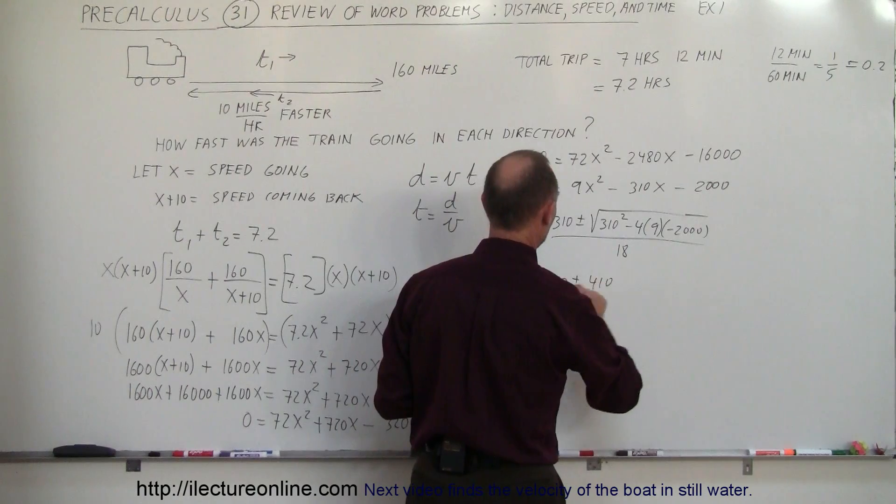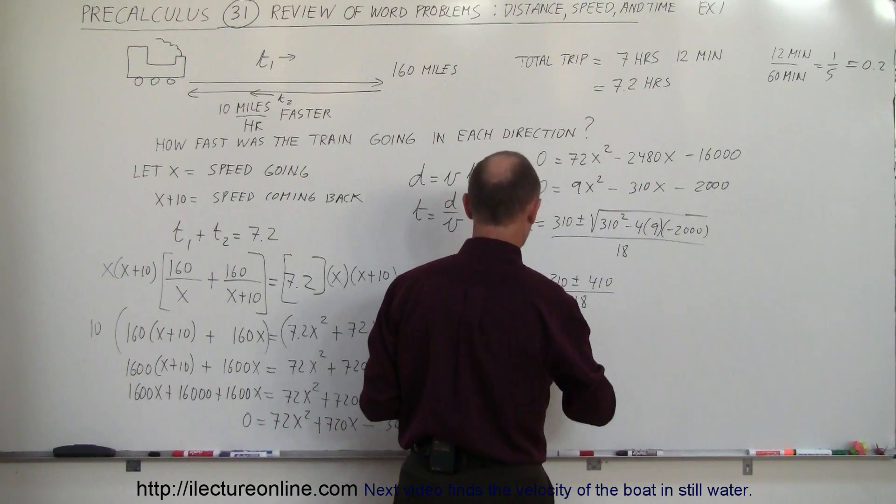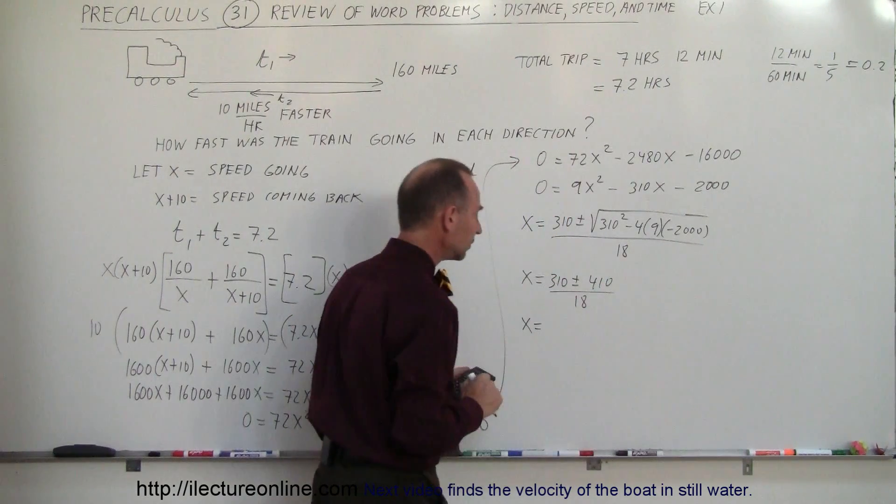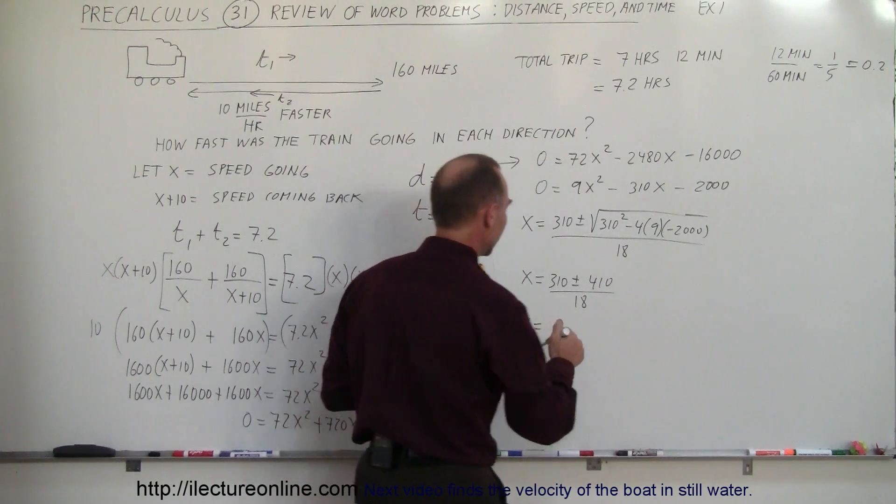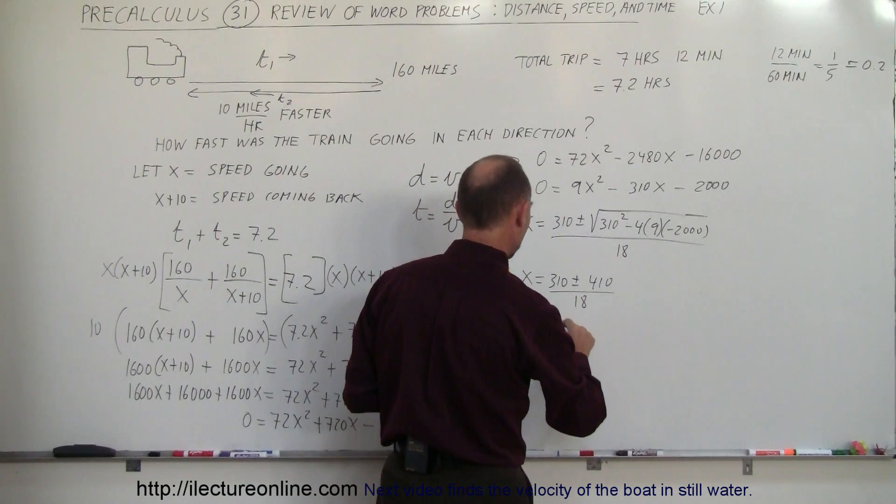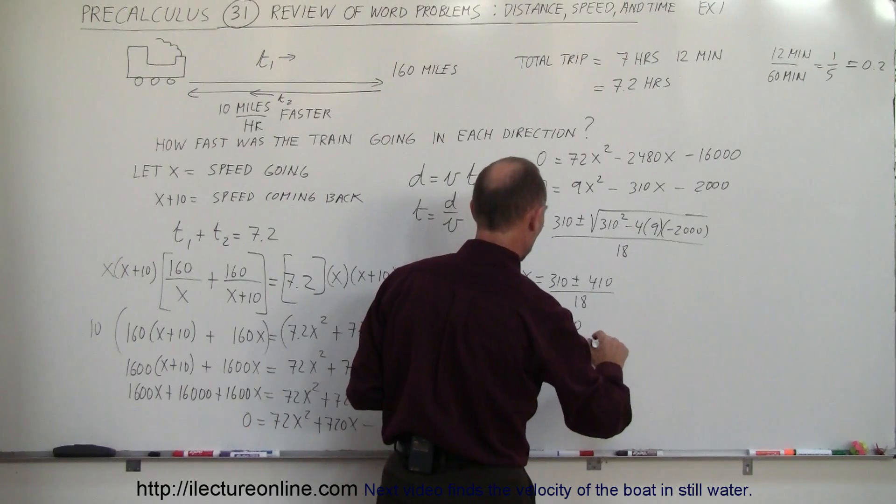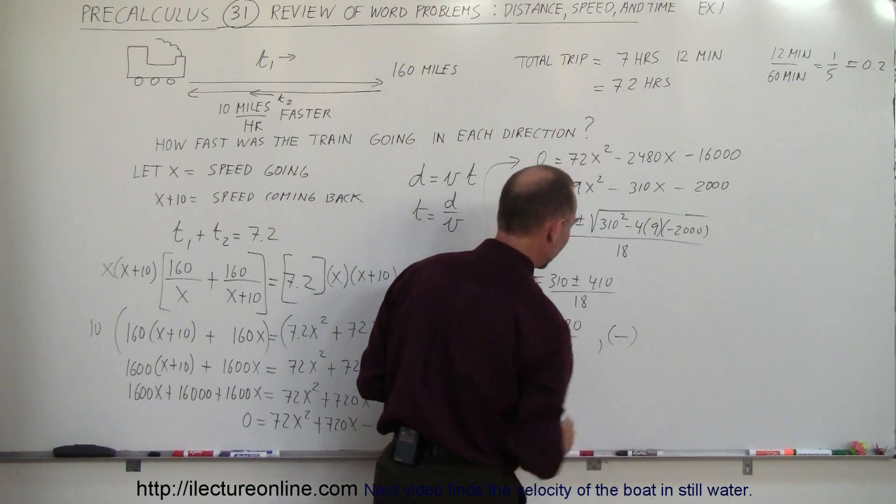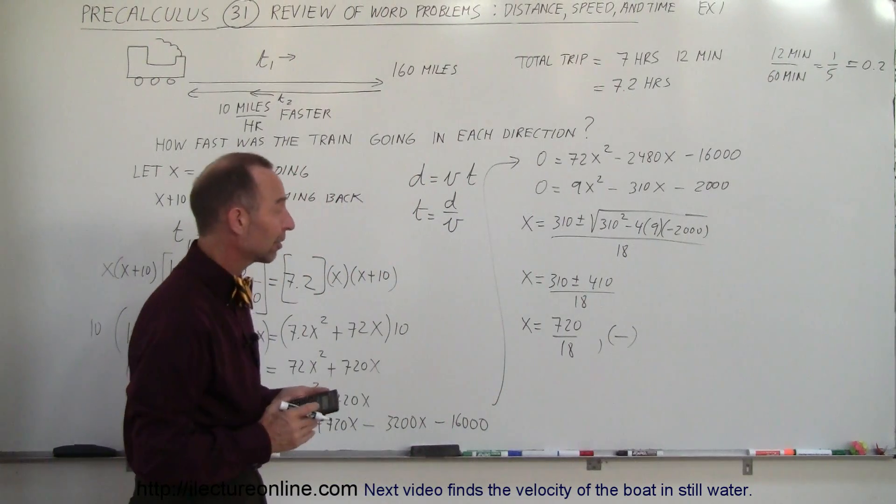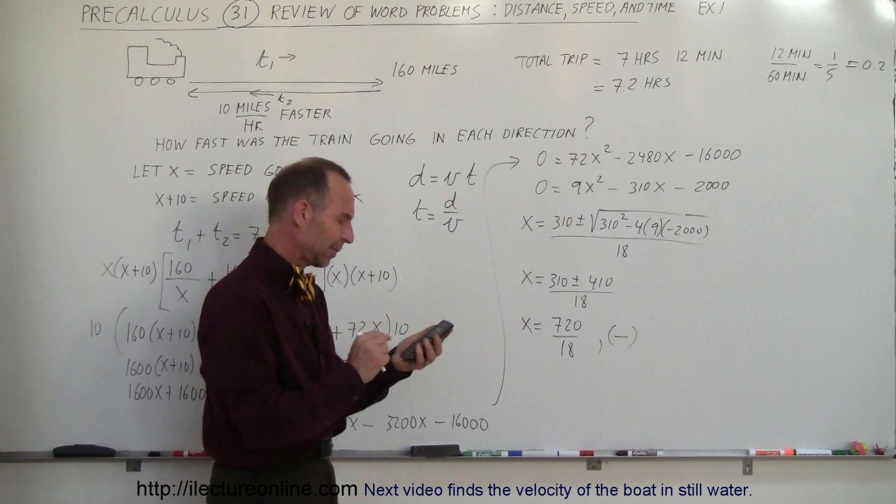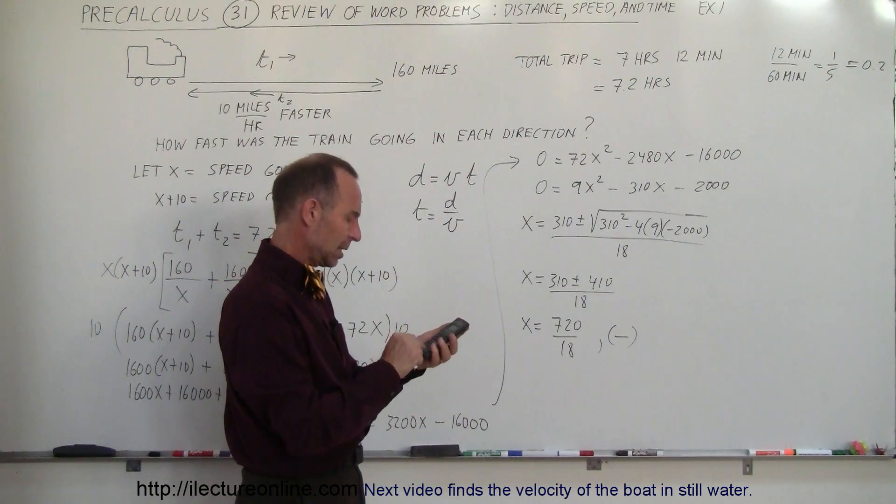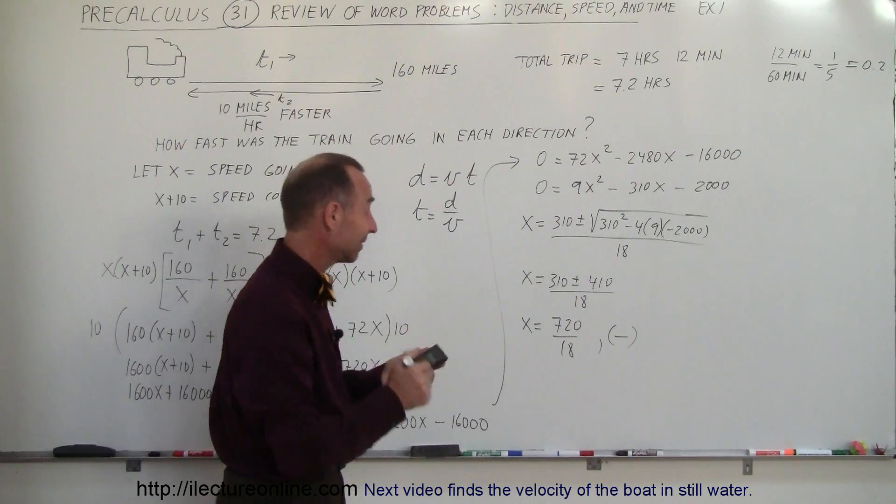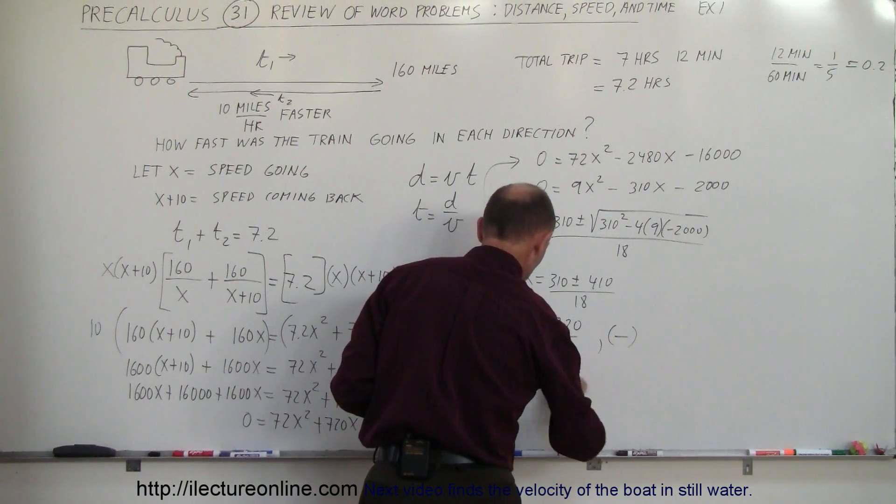So plus or minus 410 divided by 18. So x equals, if I add the two together, I get 720 divided by 18, or if I subtract the two together, I get a negative number. And of course, x cannot be negative, so that's not a possible value. So it would be 720 divided by 18, and that's exactly 40.